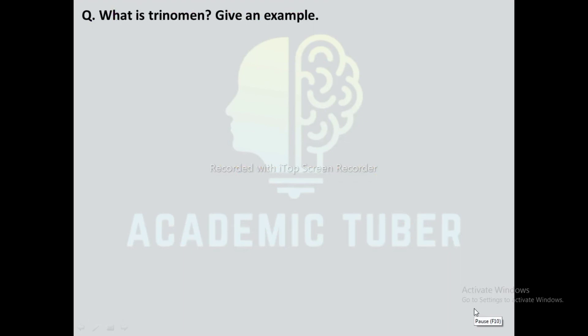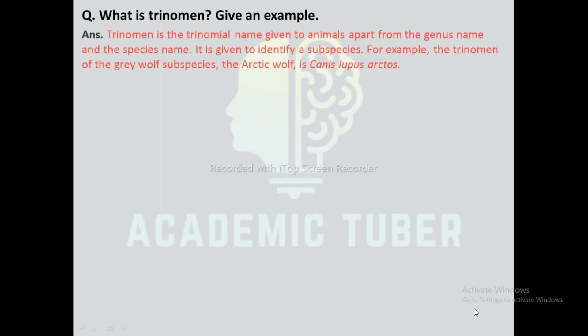Here is one question: What is trinomen? Give an example. Trinomen is the trinomial name given to animals apart from the genus name and the species name. It is given to identify subspecies. For example, the trinomen of the gray wolf subspecies, the arctic wolf, is Canis lupus arctos.